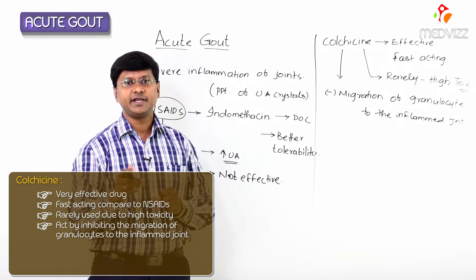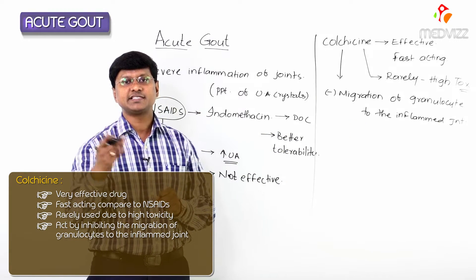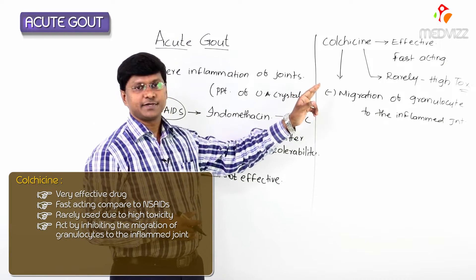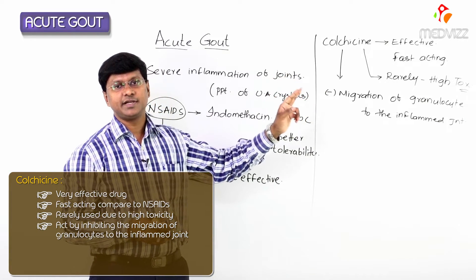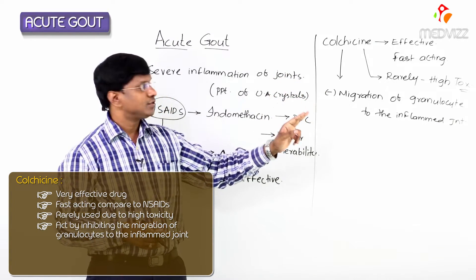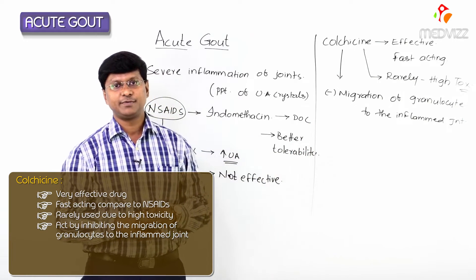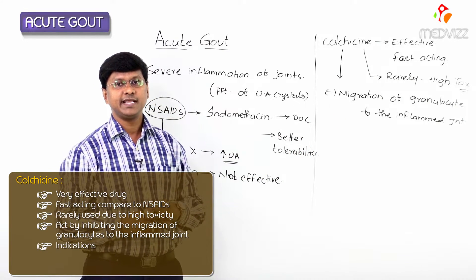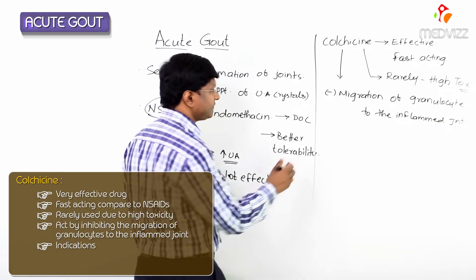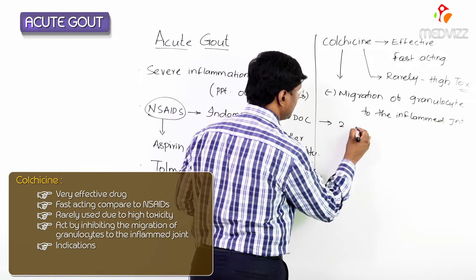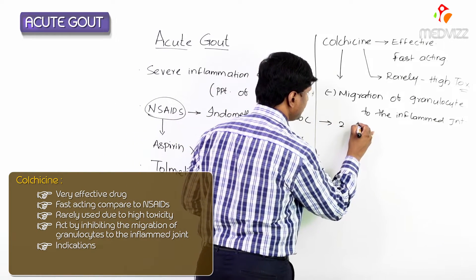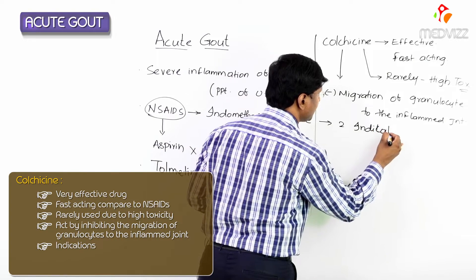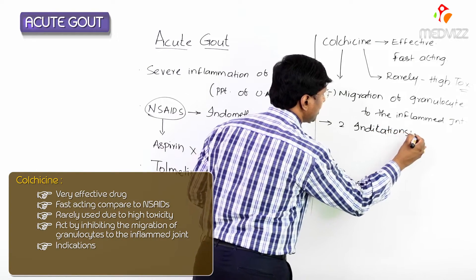Because granulocytes, once they reach the inflamed joint, will further release inflammatory mediators that increase pain. So the mechanism of action of colchicine is inhibiting granulocyte migration to the inflamed joint.